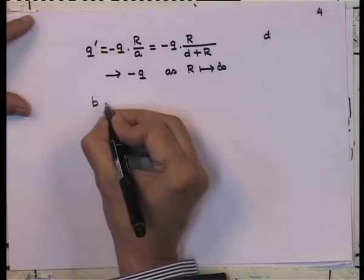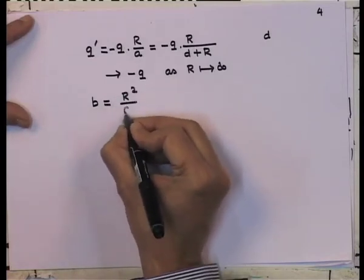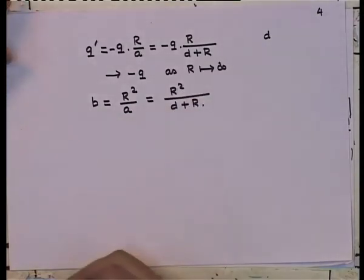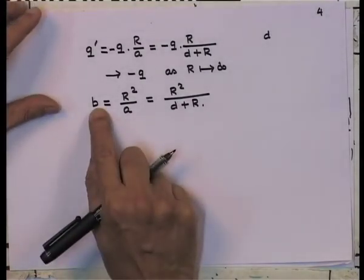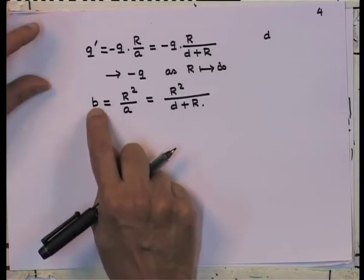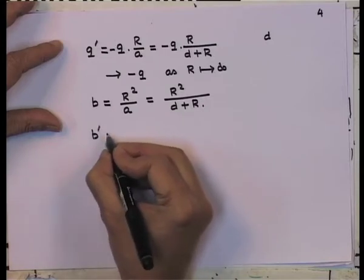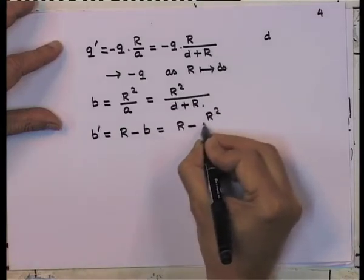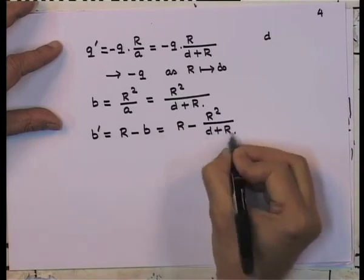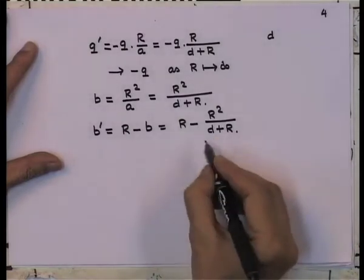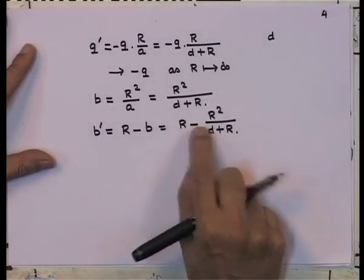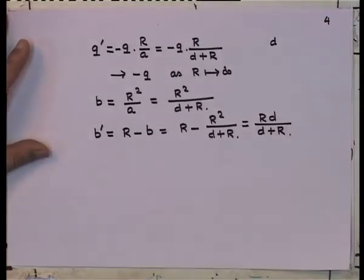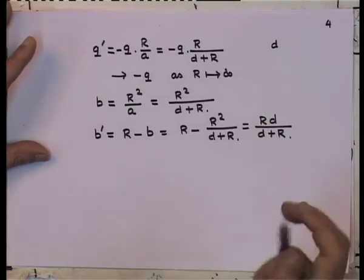Similarly, the image distance b = R²/a = R²/(d + R). The image distance from the surface is R − b = R − R²/(d + R) = Rd/(d + R). As R → ∞, this gives simply d — the image is at distance d behind the surface, as expected for a plane conductor.